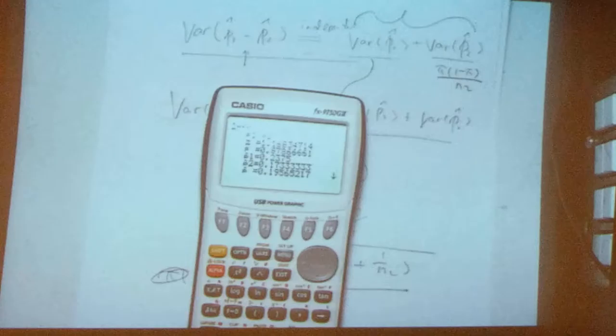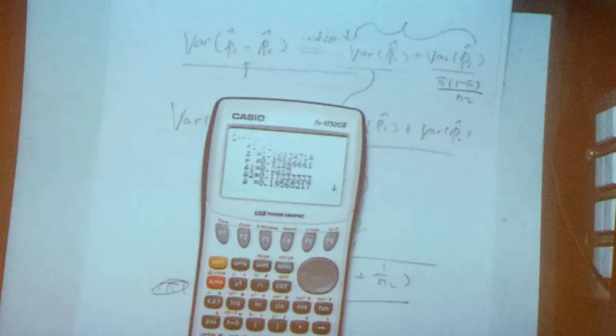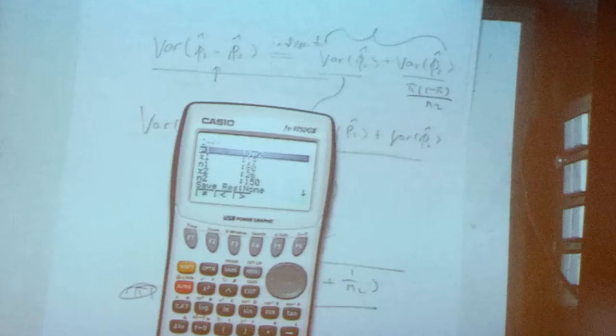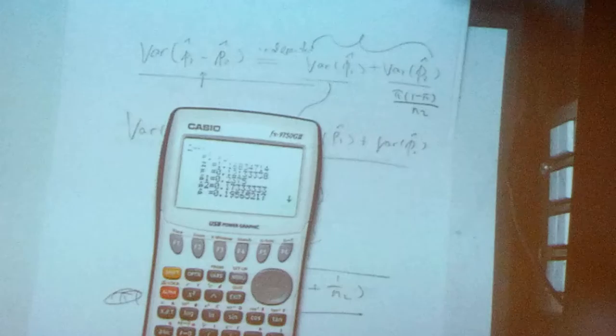The p value will now become 0.8 something, right? So a totally different p value. If you go back, okay, let me change the different alternative. Then you get another different p value. Of course, the processing is the same, but the p value will be different.